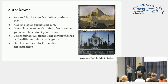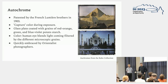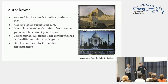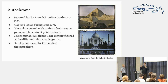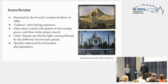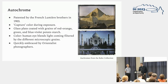The autochrome process was invented and patented by the French Lumière brothers in 1903. In this process, color is actually captured — it is derived from a photo-mechanical process. A glass plate is coated with microscopically small grains of red, orange, green, and blue-violet potato starch. The colors we see on the autochrome are produced when light passes through these different potato starch grains, and our human eye blends them together into many different colors — a little bit like pointillist paintings, based on the same principle. This process was quickly embraced by Orientalist photographers who were very interested in capturing the light of the Orient.